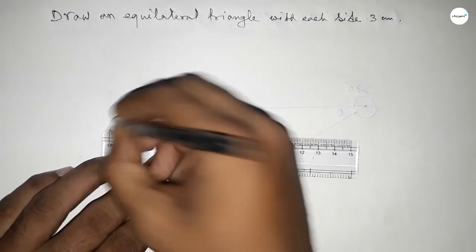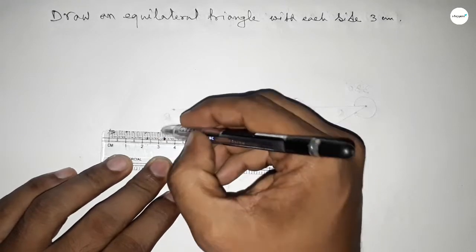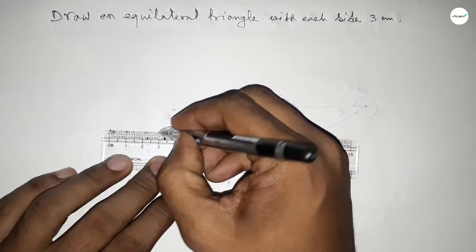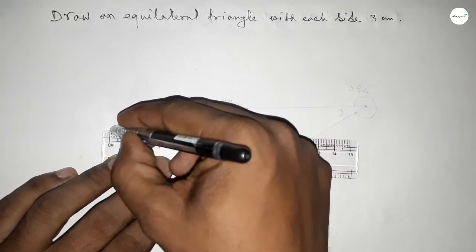First this is starting 0, and this is 1, 2, and this is 3. So first drawing a line of length 3 centimeter by using scale.